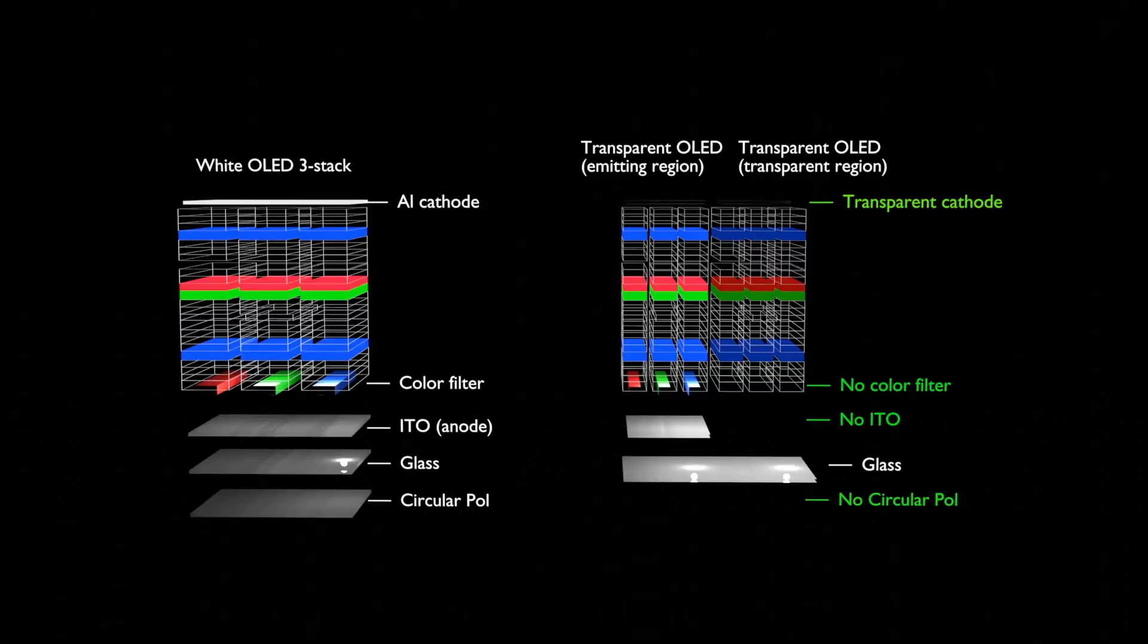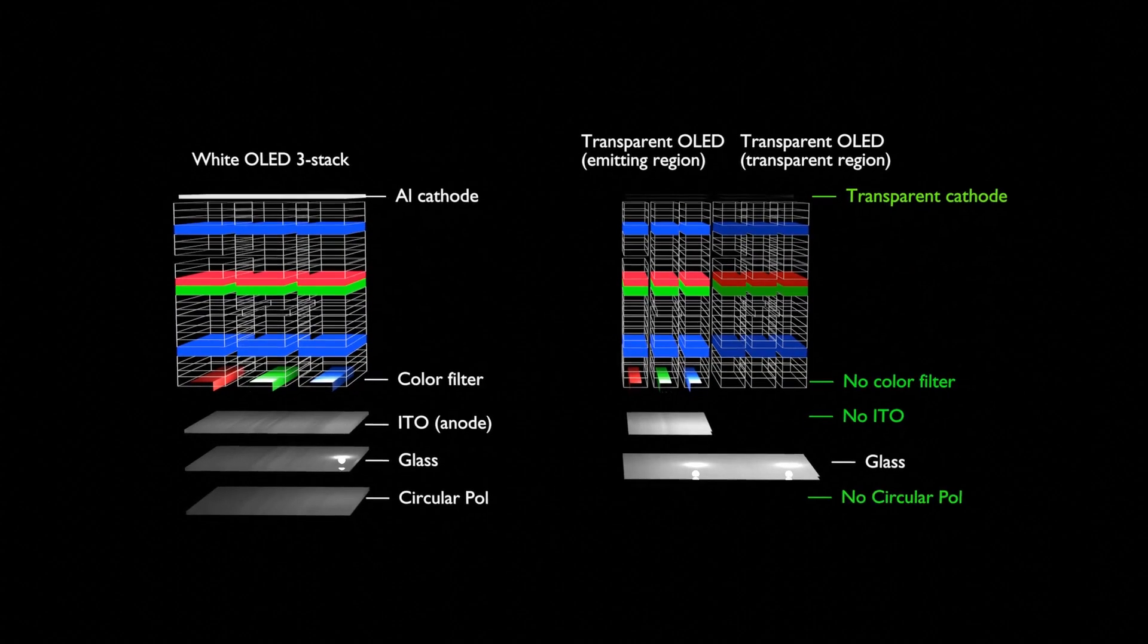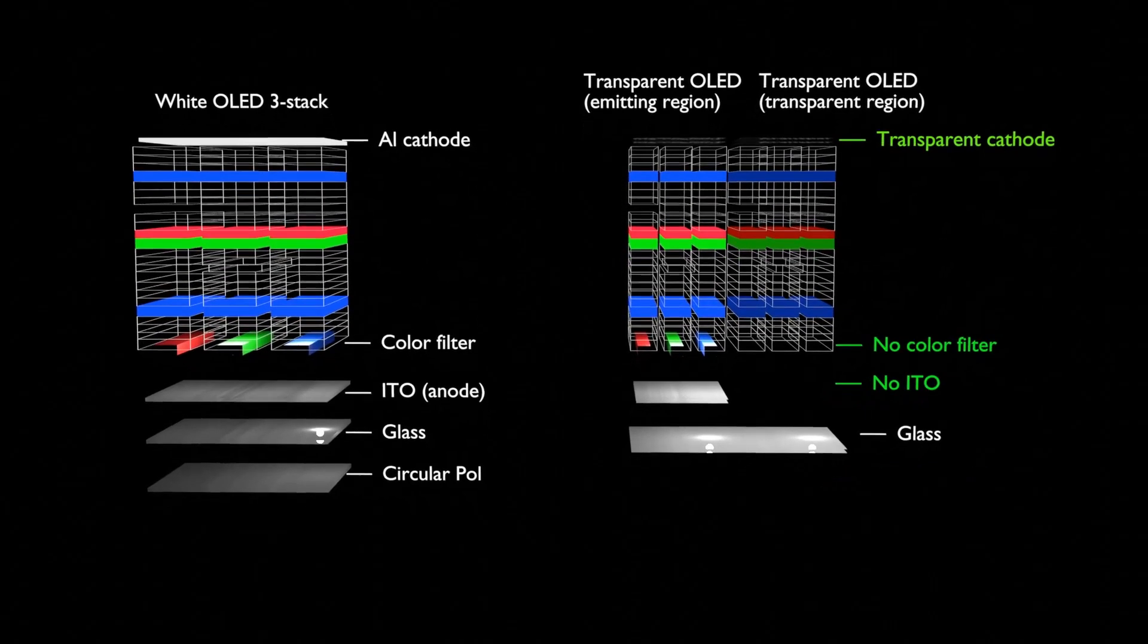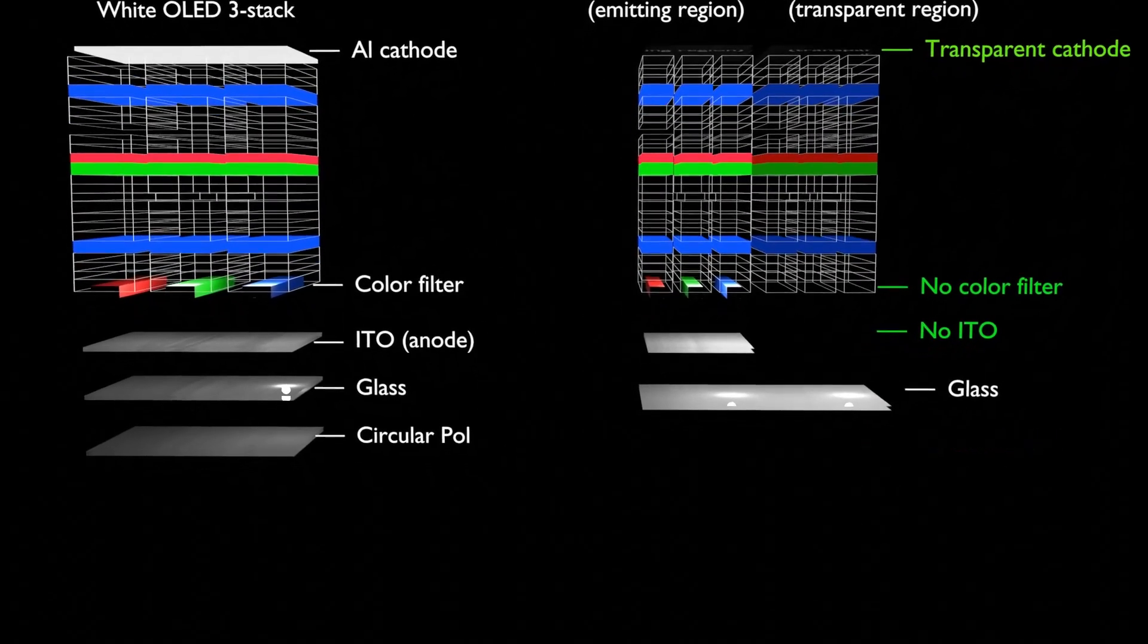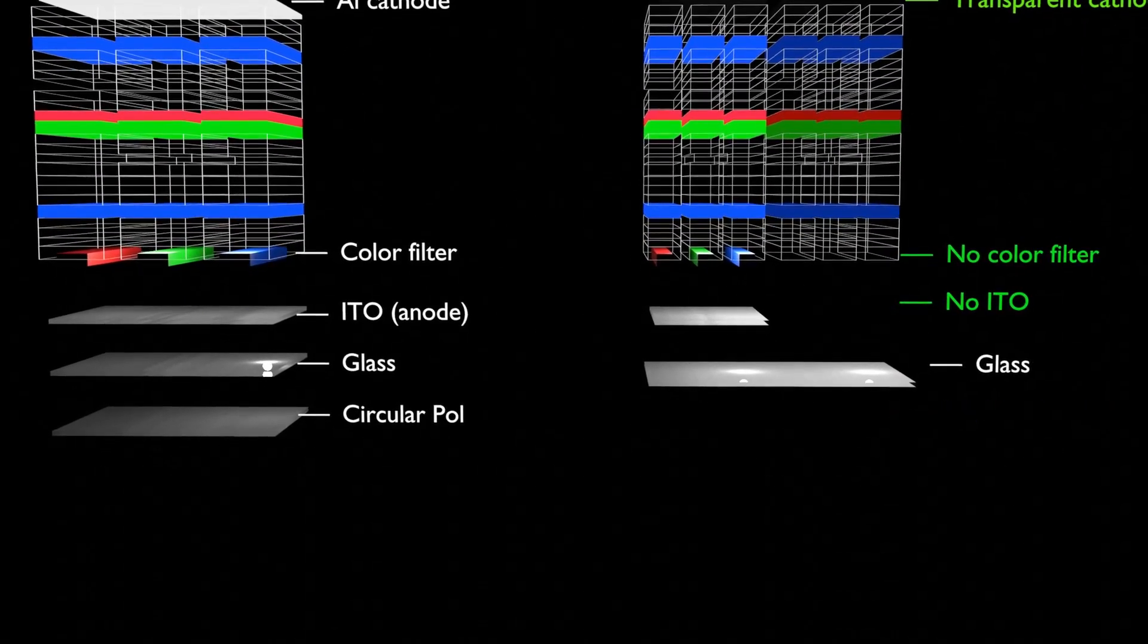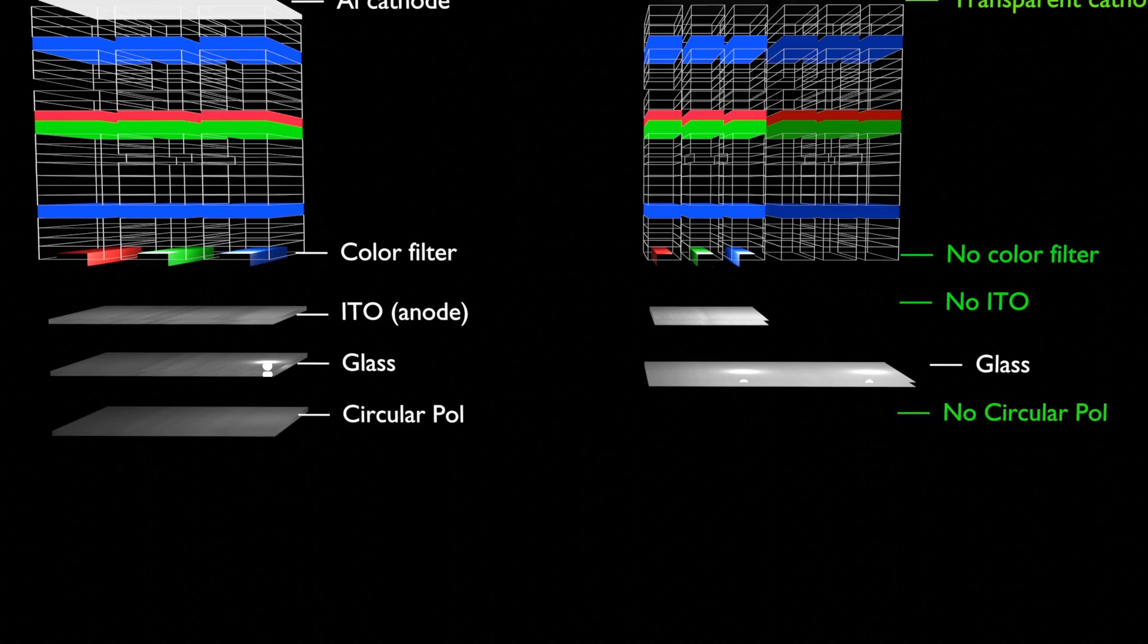Finally, a circular polarizer that prevents reflection of external light by metal is not used in transparent OLEDs. The circular polarizer also serves to block external light reflection, but more than 50% of the light generated inside the OLED is also absorbed, so it is not used.